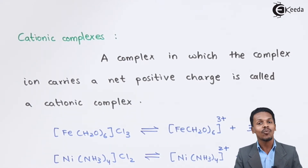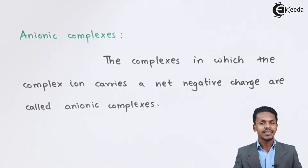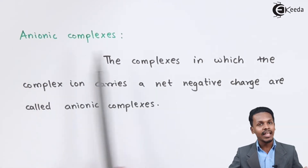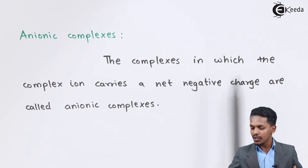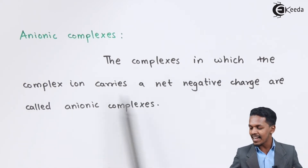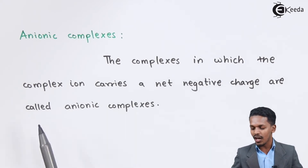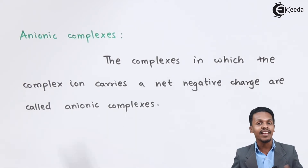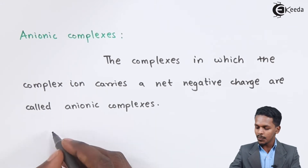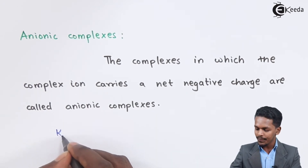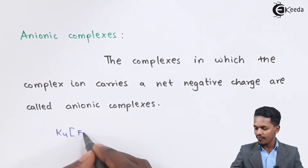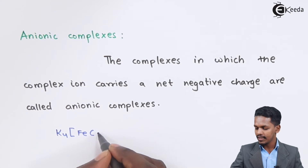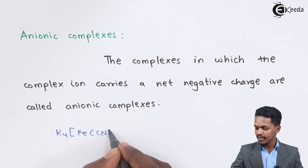Now let us understand anionic complexes. The definition is: complexes in which the complex ion carries a net negative charge are called anionic complexes. For example, consider K₄[Fe(CN)₆].